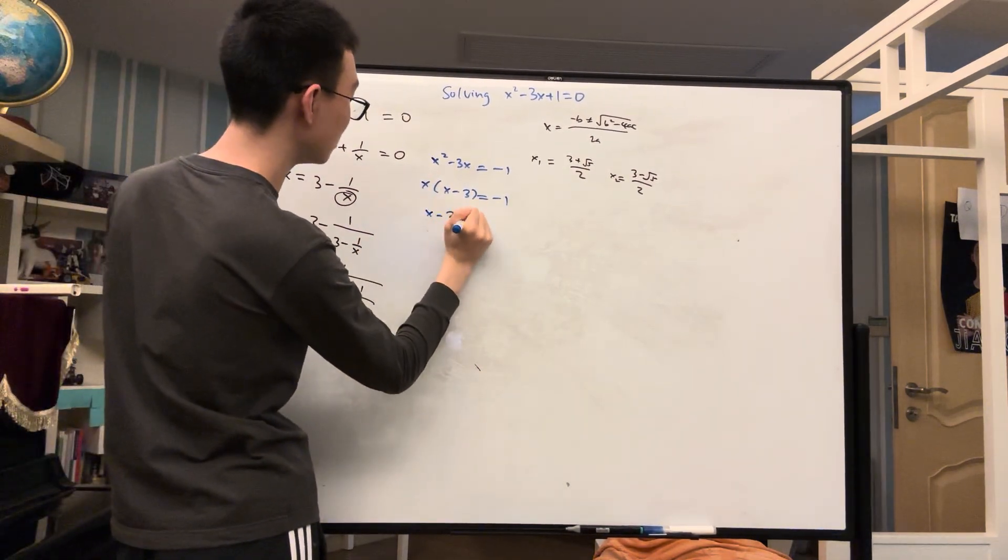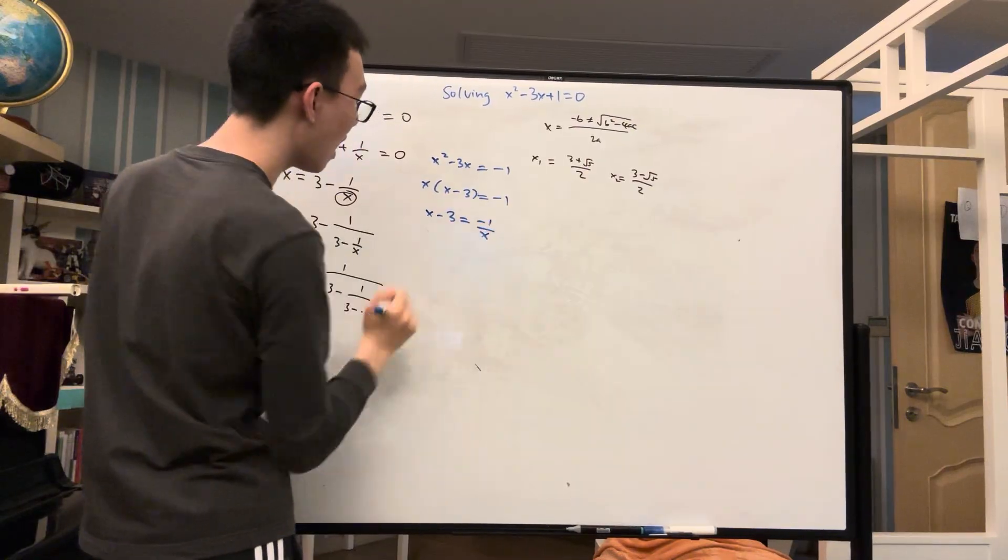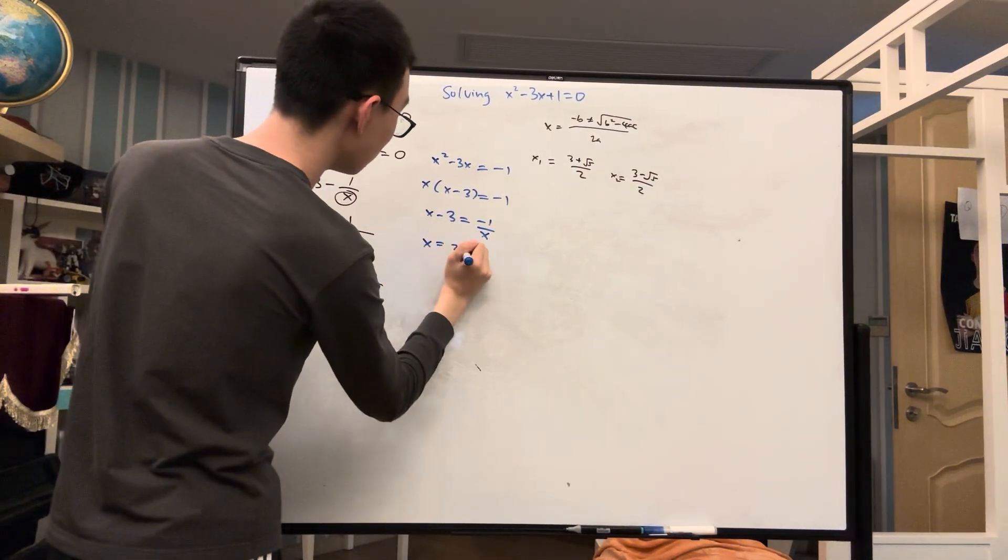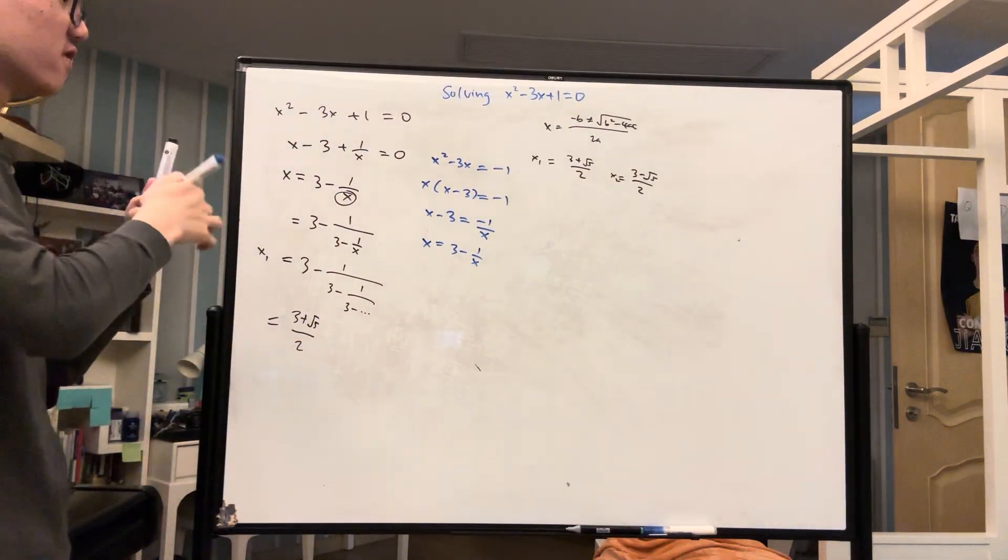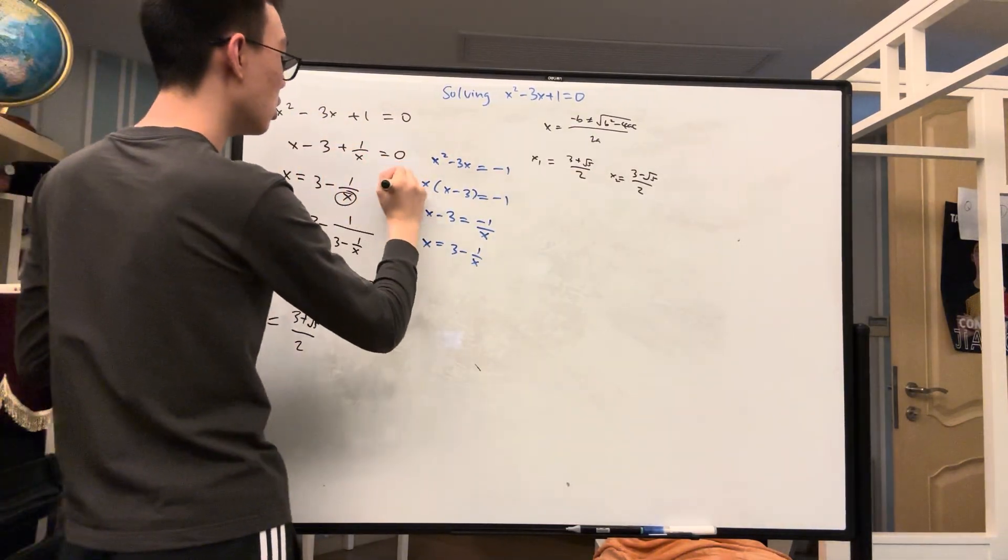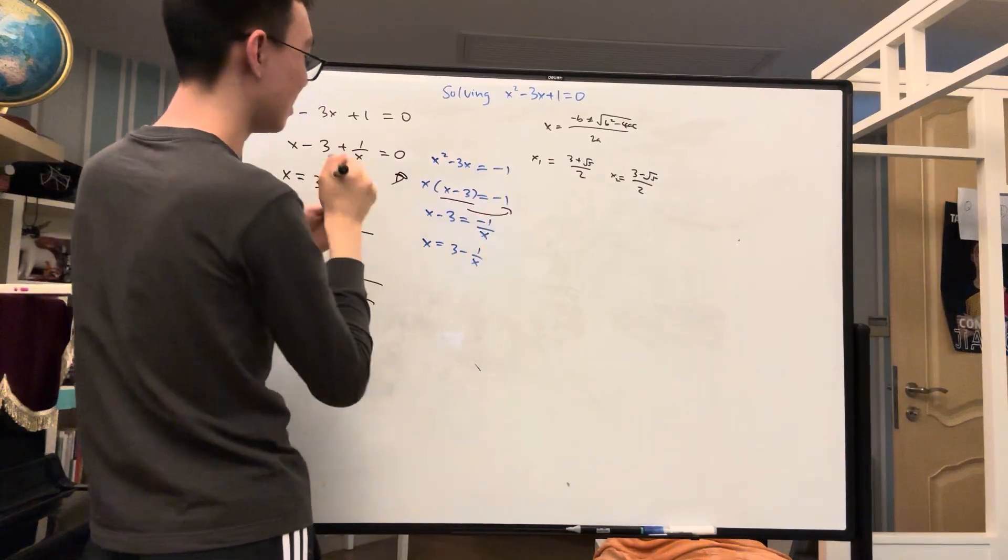So we had that x minus 3 is equal to negative 1 over x, or x is equal to 3 minus 1 over x. However, what if during this step we instead chose to move the x minus 3 over?